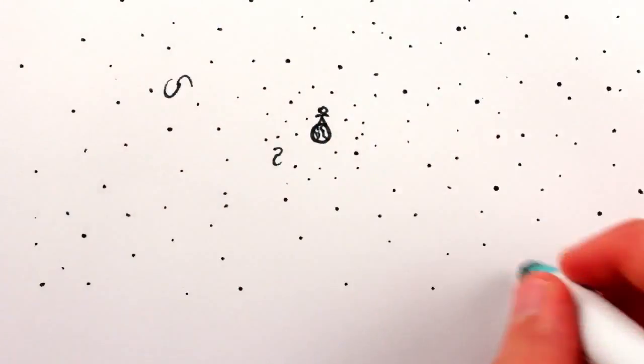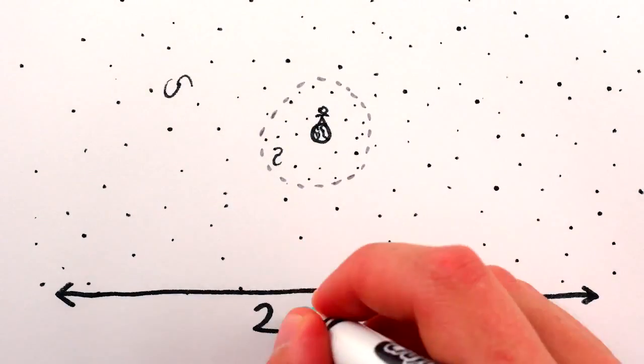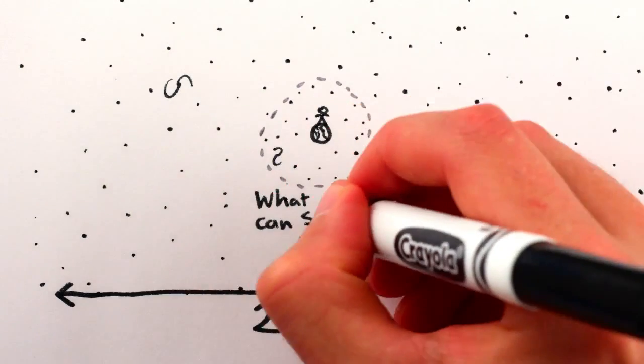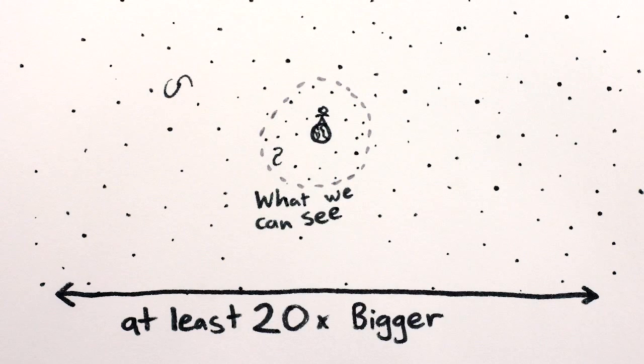The whole universe is really big. Current data show it's at least 20 times bigger than the observable universe, but that's just a lower bound. It might be infinite.